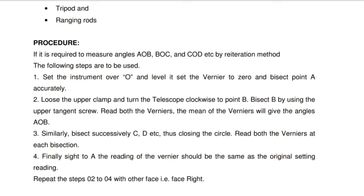Step 3: Similarly, bisect successively C, D, etc., thus closing the circle. Read both verniers at each bisection. Step 4: Finally, sight to A — the reading of the vernier should be the same as the original setting reading. Repeat steps 2 to 4 with the other face, that is, face right.